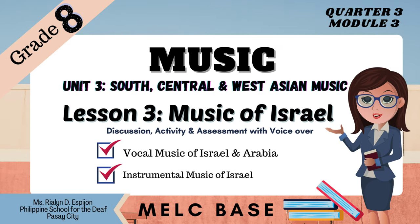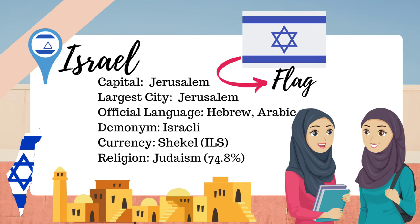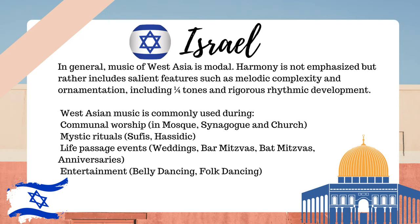Lesson 3: West Asia — Israel. Capital and largest city: Jerusalem. Official language: Hebrew and Arabic. Currency: Shekel (ILS). Religion: Judaism, 74.8%. In general, music of West Asia is modal. Harmony is not emphasized; rather it includes salient features such as melodic complexity and ornamentation, including one-fourth tones and rigorous rhythmic development. West Asian music is commonly used during communal worship in mosque, synagogue, and church; mystic rituals (Sufis, Hasidic); life passage events such as weddings, bar mitzvahs, bat mitzvahs, and anniversaries; and entertainment such as belly dancing and folk dancing.